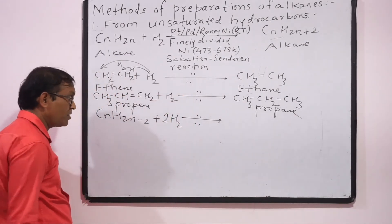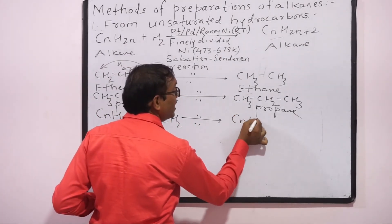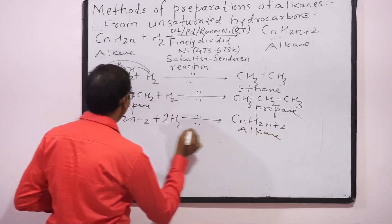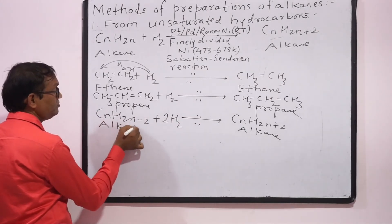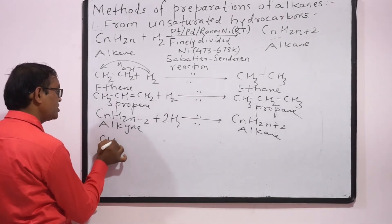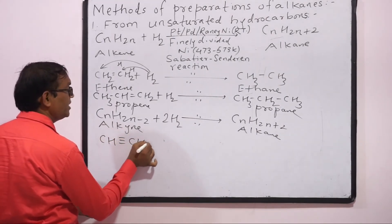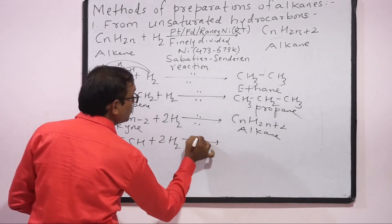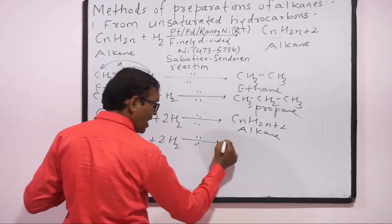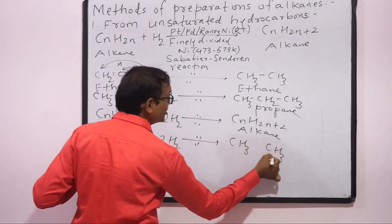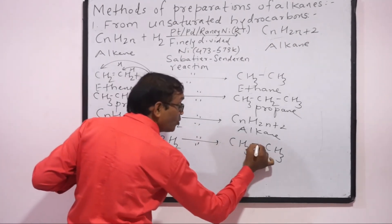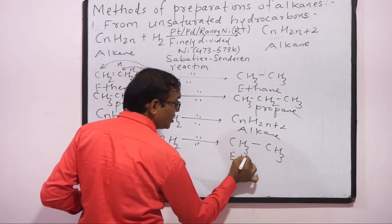CH3-CH3. Dono carbon pe 2-2 hydrogen atoms add hoi. This way triple bond ka roopan single bond mein ho ga. This is ethyne. This is acetylene aur better way ethyne hum use karte, ethane.